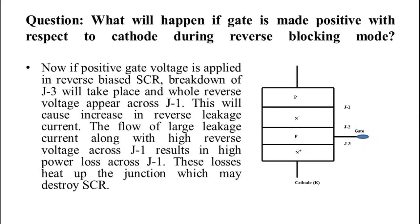Now if positive gate voltage is applied in reverse bias SCR, then J3 breaks first and whole voltage appears across junction J1. This will cause increase in reverse leakage current. The flow of large leakage current along with high reverse voltage across junction J1 will result in high power loss across junction J1. These losses heat up the junction which may destroy the SCR.